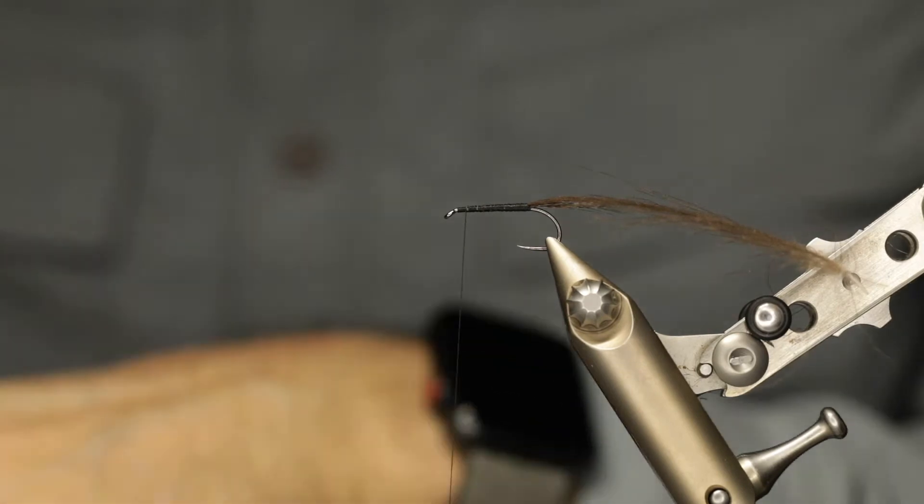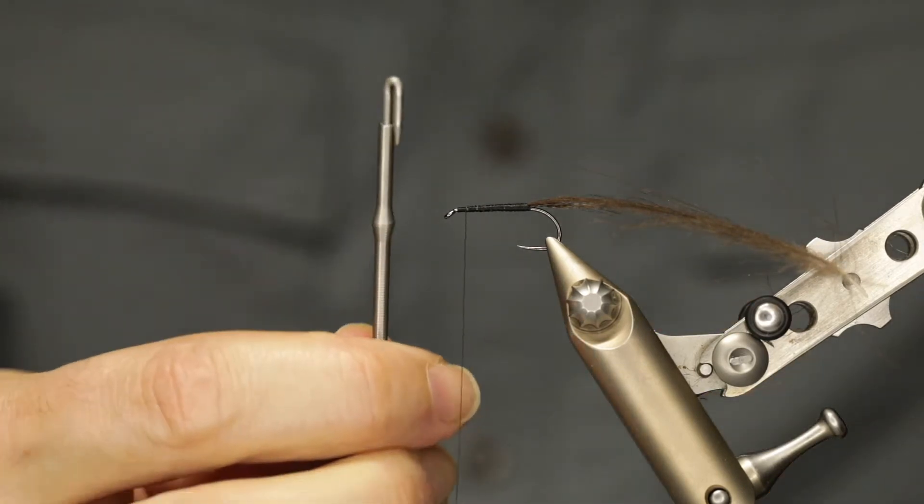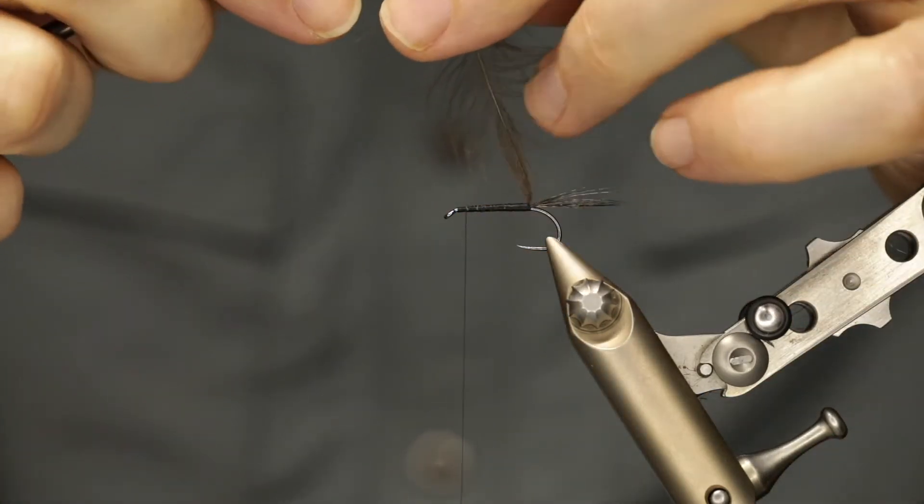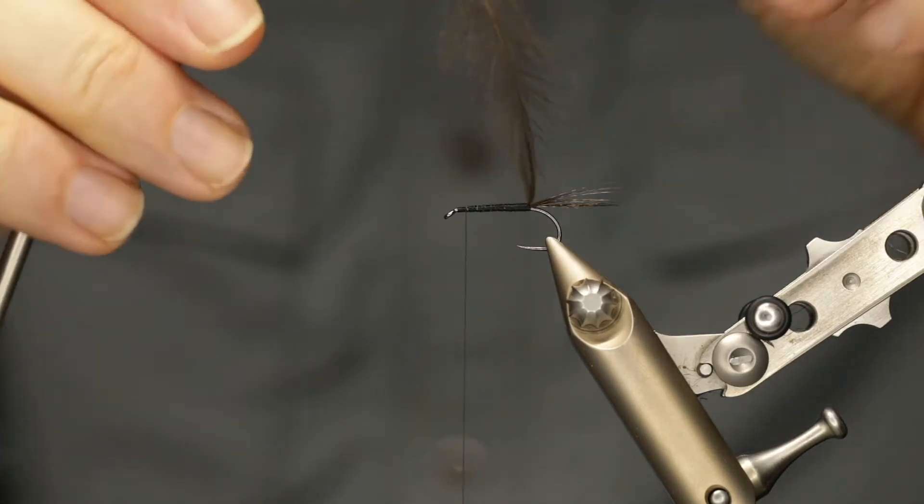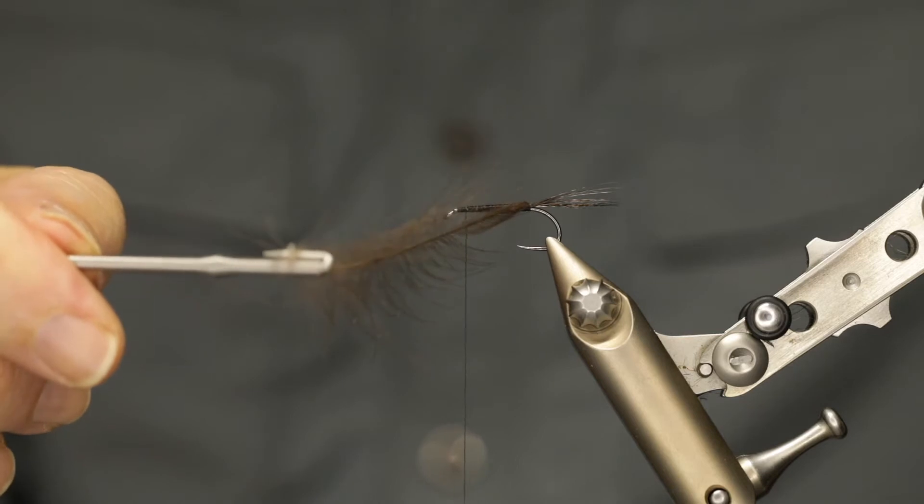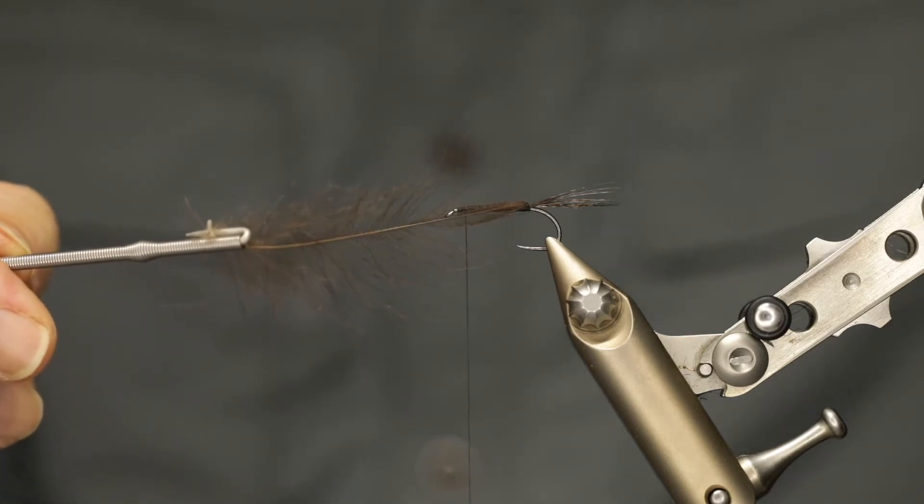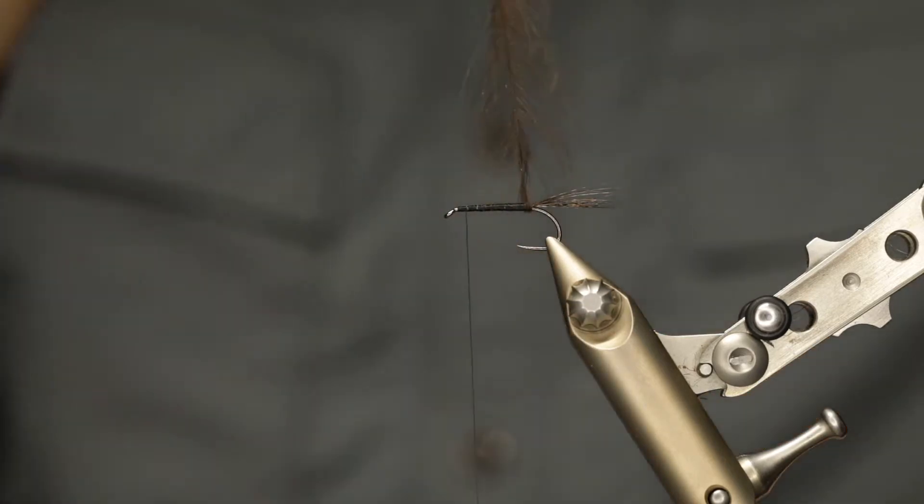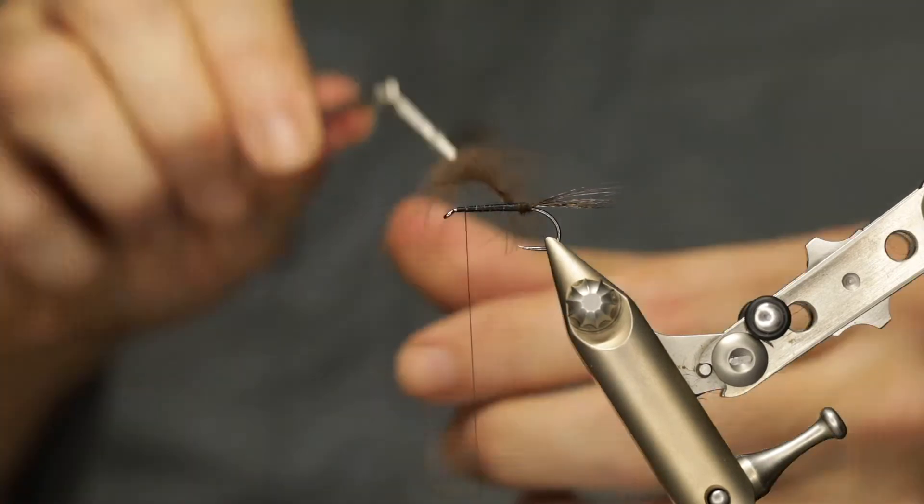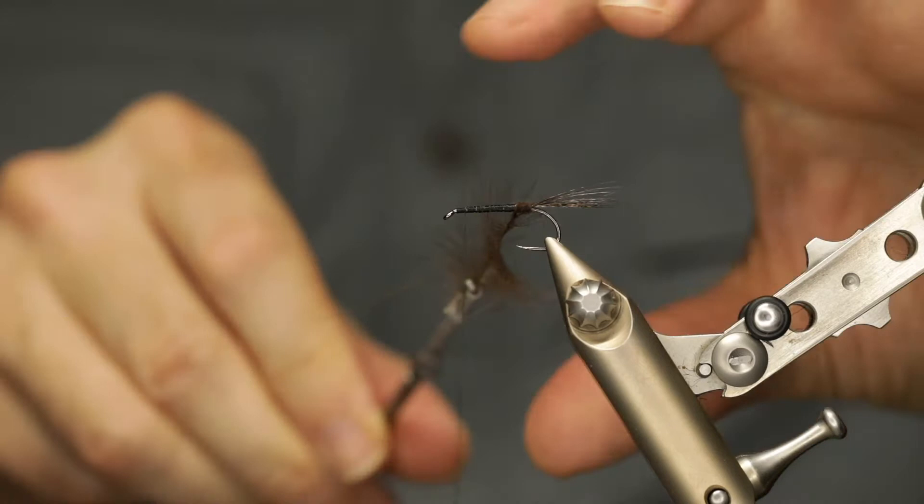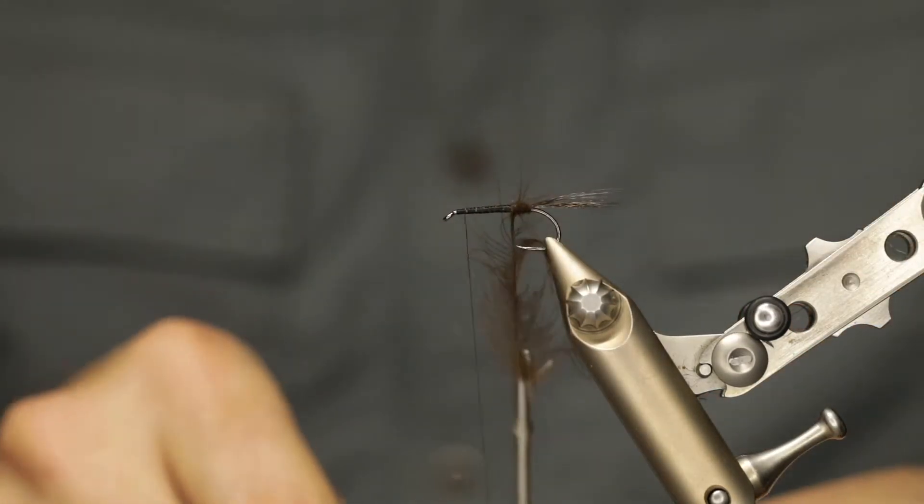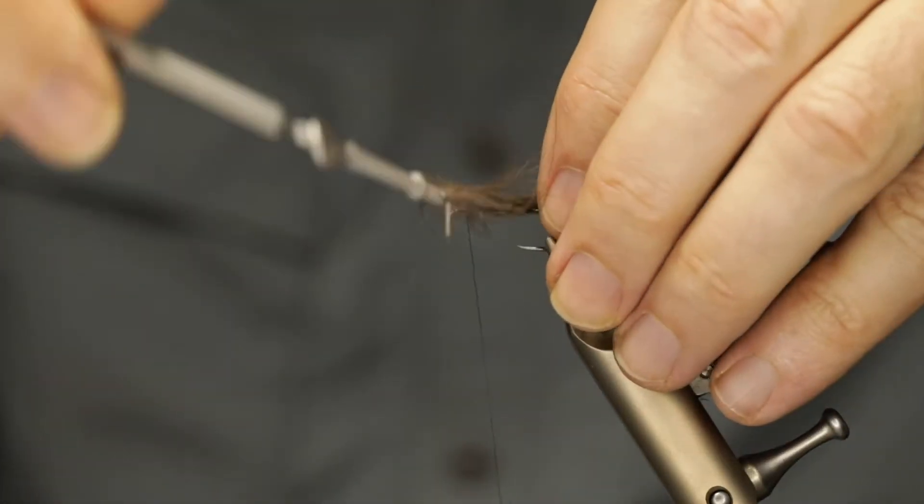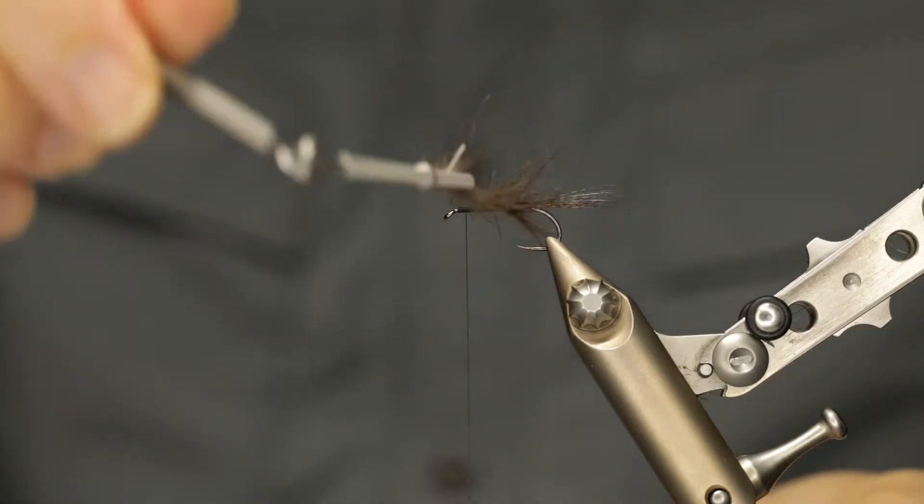Now with a hackle plier of choice, fix the base of the feather into your hackle plier. From here, begin wrapping the feather around the hook itself. The first wrap I don't tend to twist too much, and then from there on in, twist and wrap, slowly moving forward towards the front of the hook and to the point where you would like the body of your fly to end. I tend to try and make it to about two-thirds of the way towards the front of the hook.